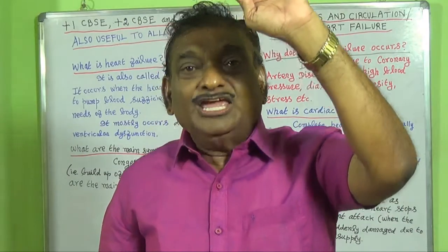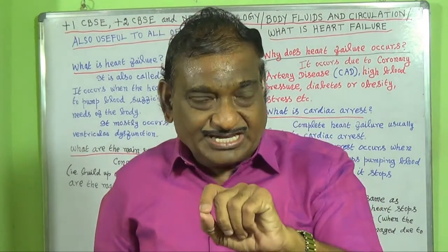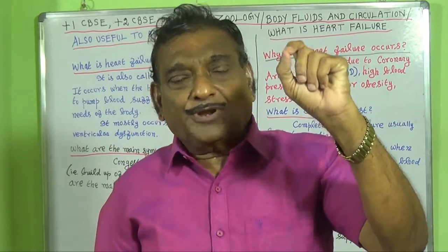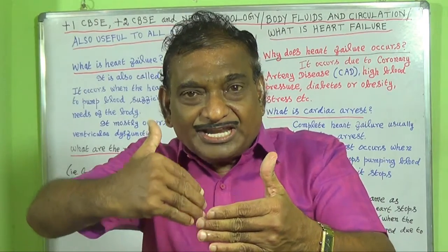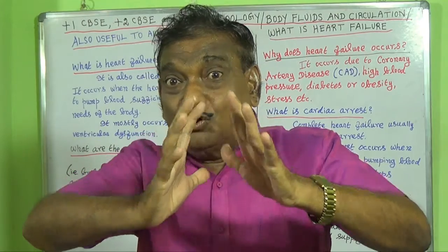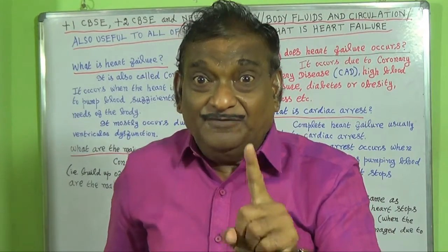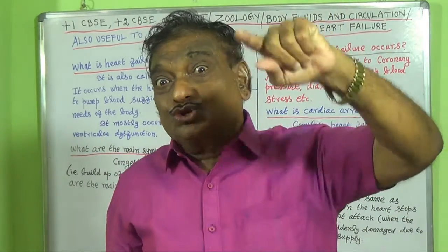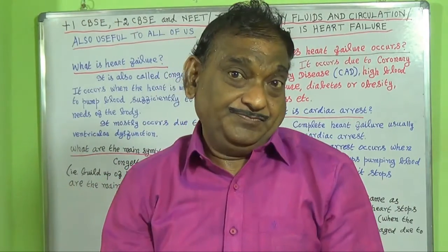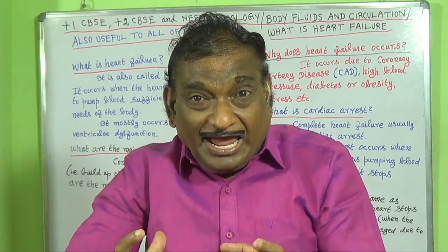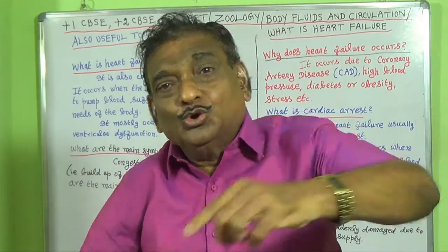The left ventricle is placed below and nearer to the left atrium. In the case of the right atrium, right ventricle, and left atrium, the blood has to come to the nearer chamber, so no greater force is required for contraction. But in the case of the left ventricle, when it contracts, the blood has to go from the heart to different parts of the body — to all regions of the body. So the left ventricle has to contract with greater force to pump blood from the heart to all parts of the body.